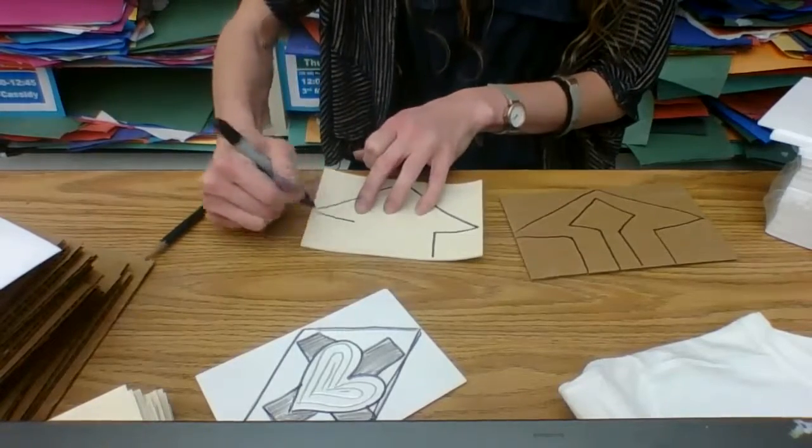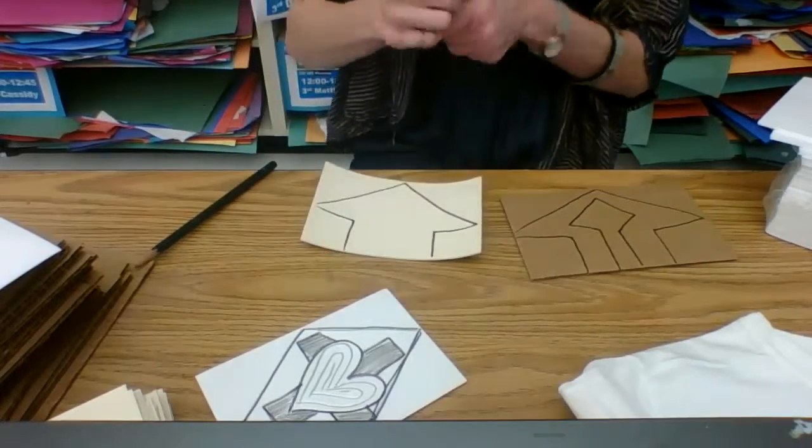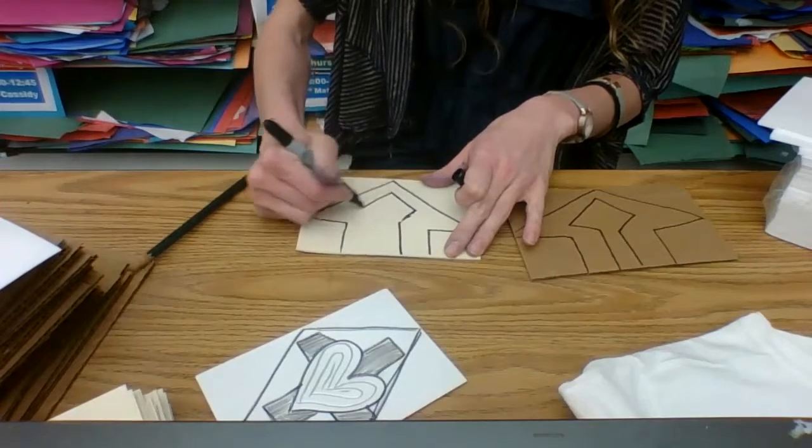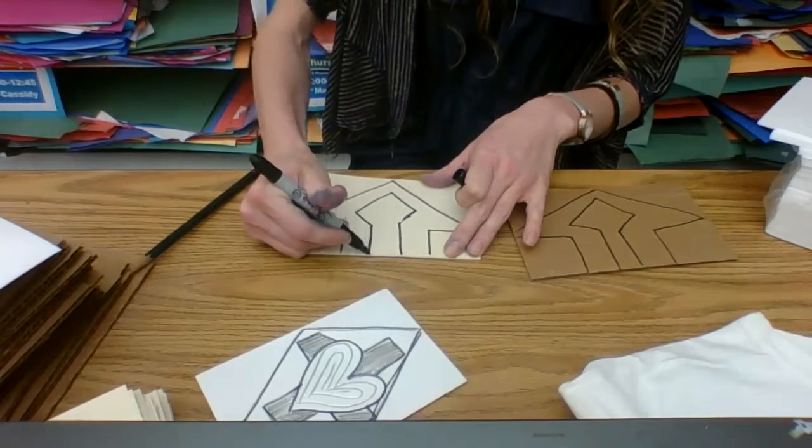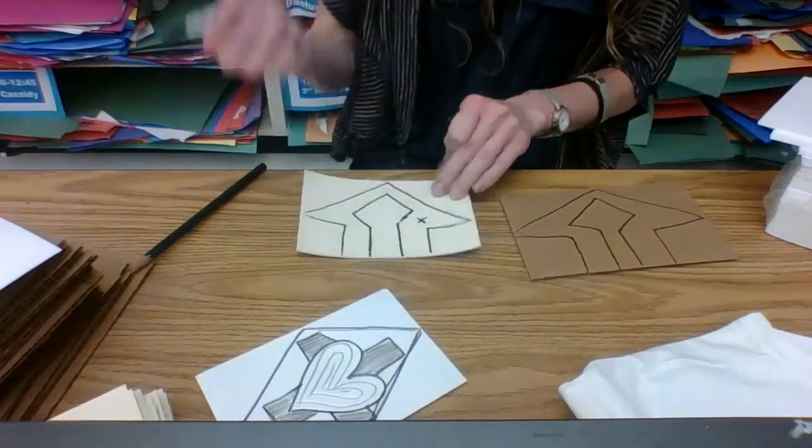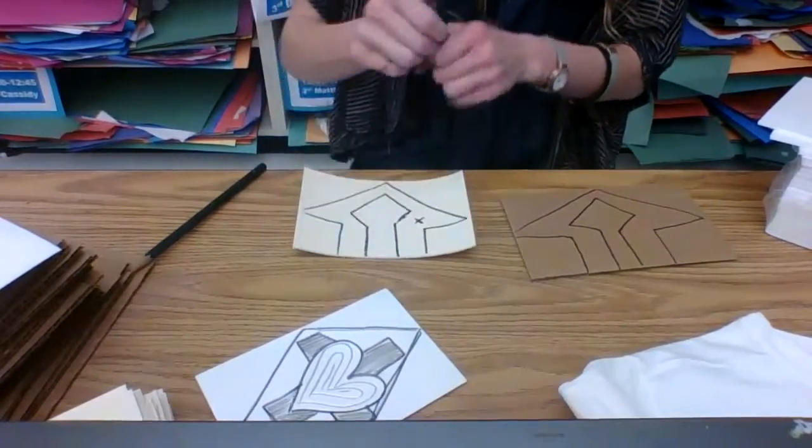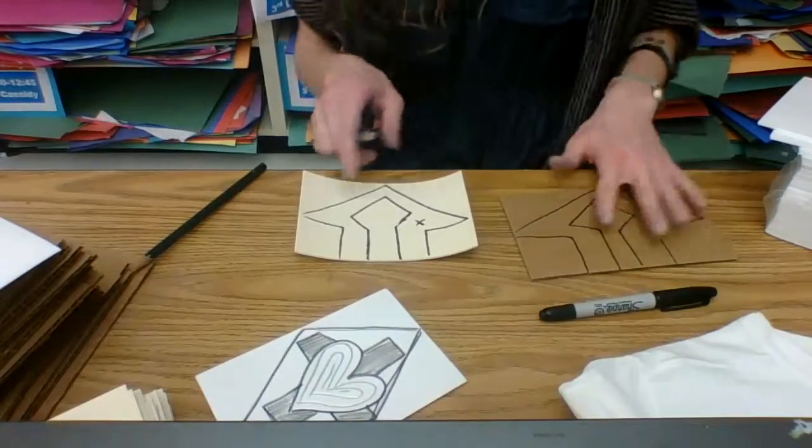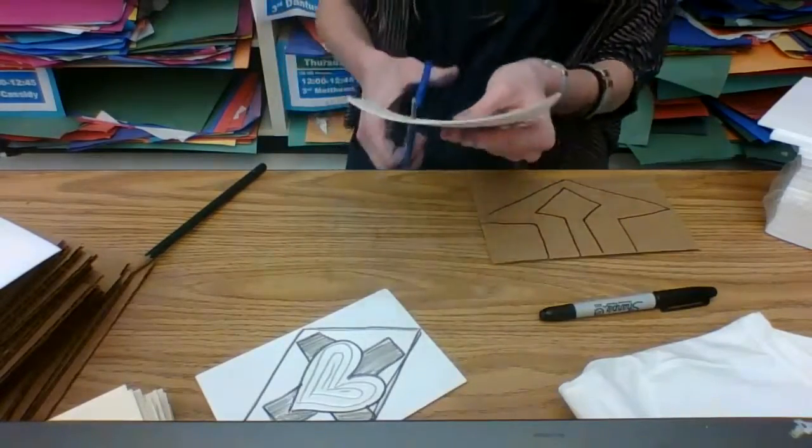Anything that I draw here on this final is going to be my stamp. So the positive space is what you're leaving. The negative space is the empty space that you're going to cut away. And you're going to glue this here.